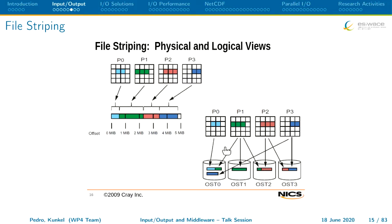File striping looks inefficient at first — pieces here, there, everywhere — but because they're on different storage, you can process them simultaneously in parallel. This helps reconstruct your file faster because pieces come from different parts at the same time. It's not one size fits all; we have to learn the situations. When I first saw this, I thought: why split my file across different storage? Then I realized — because now I can access them simultaneously. That's clever.